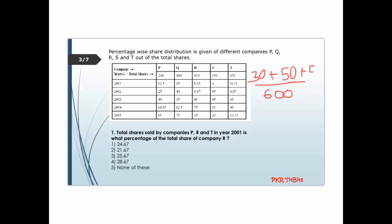To find the percentage we multiply by 100. The total is 130 divided by 6, which simplifies. Dividing gives us option 2 as the answer.